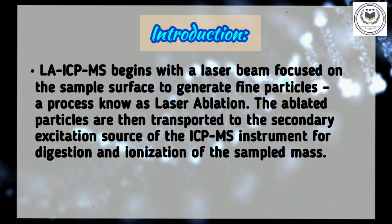LA-ICP-MS begins with a laser beam focused on a sample surface to generate fine particles, a process known as laser ablation. The ablated particles are then transported to the secondary excitation source of the ICP-MS instrument for digestion and ionization of the sampled mass. The excited ions in the plasma torch are subsequently introduced to a mass spectrometer detector for both elemental and isotopic analysis.